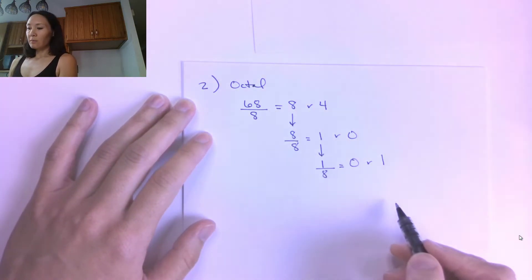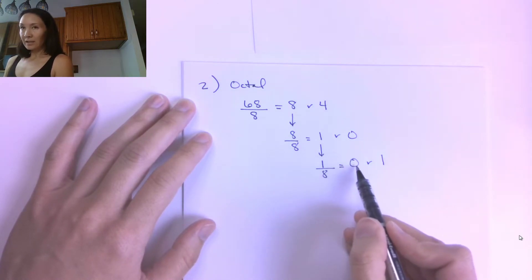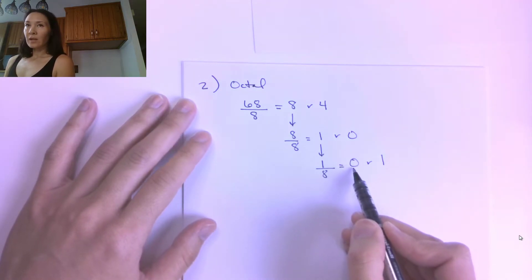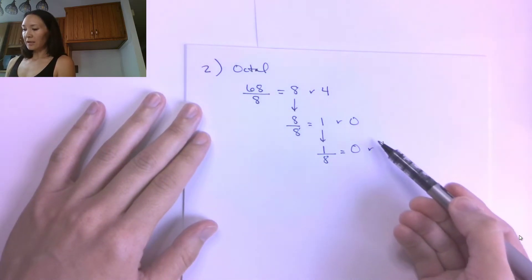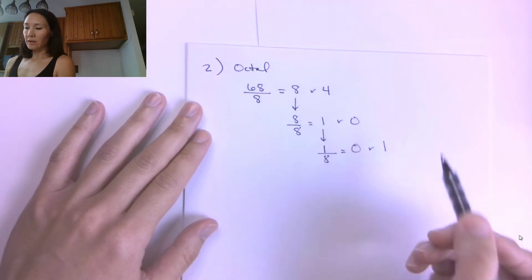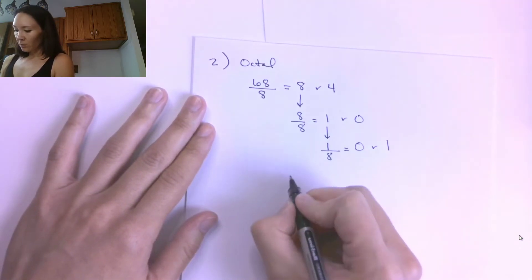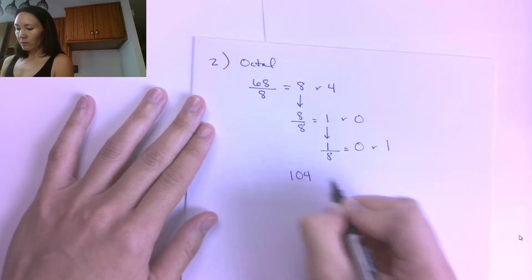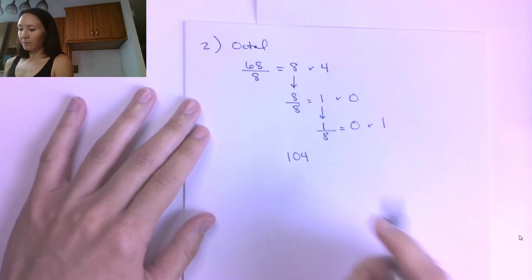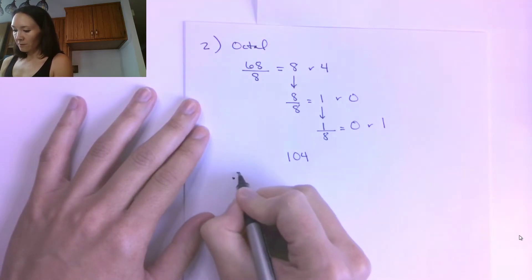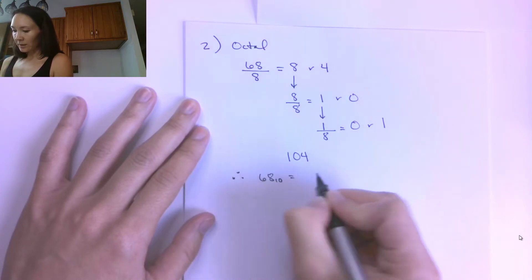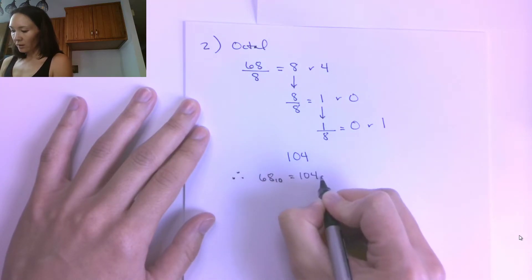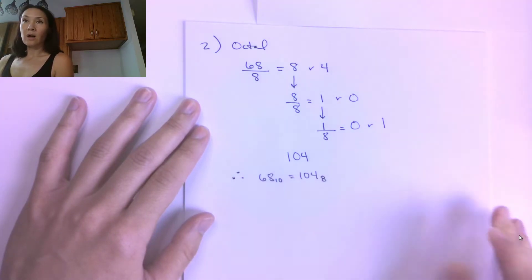The algorithm terminates when the last result equals 0. To get our conversion, we collect the remainders from bottom to top. Our remainders are 1, 0, 4. Therefore, 68 in decimal is equal to 104 in octal.